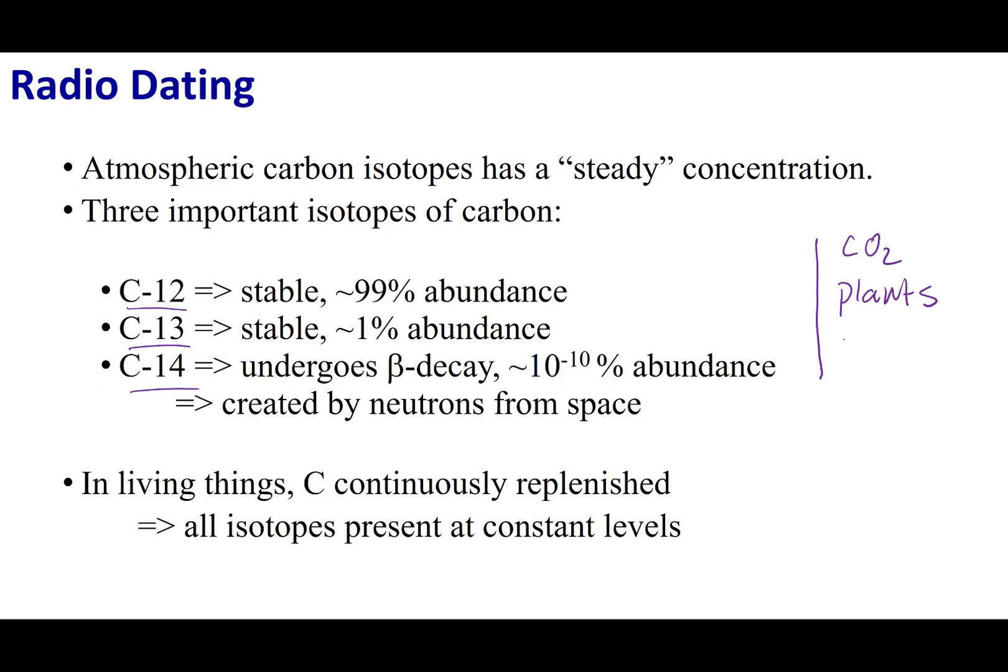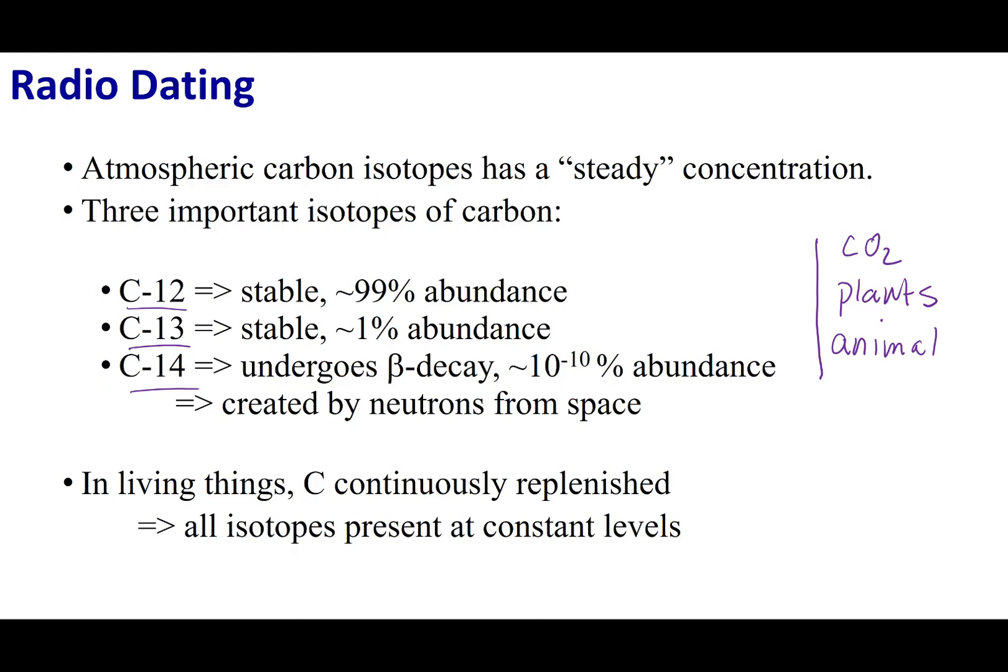So if you look at a living animal, they will also have this isotopic ratio inside their body because they're deriving their carbon content from the plants, which derive their carbon content from their atmosphere. However, what happens when a plant dies or an animal dies? Well, if a plant and an animal die, they cease all biological function, which means that they are not intaking any more nutrients.